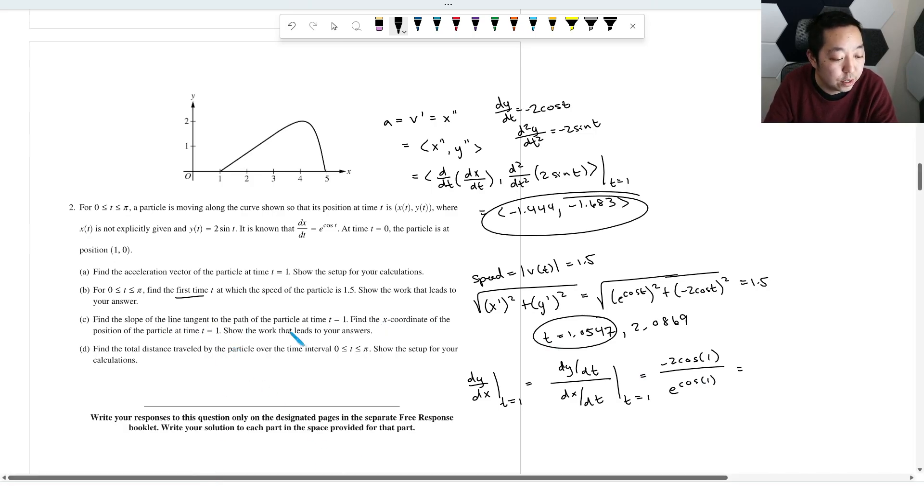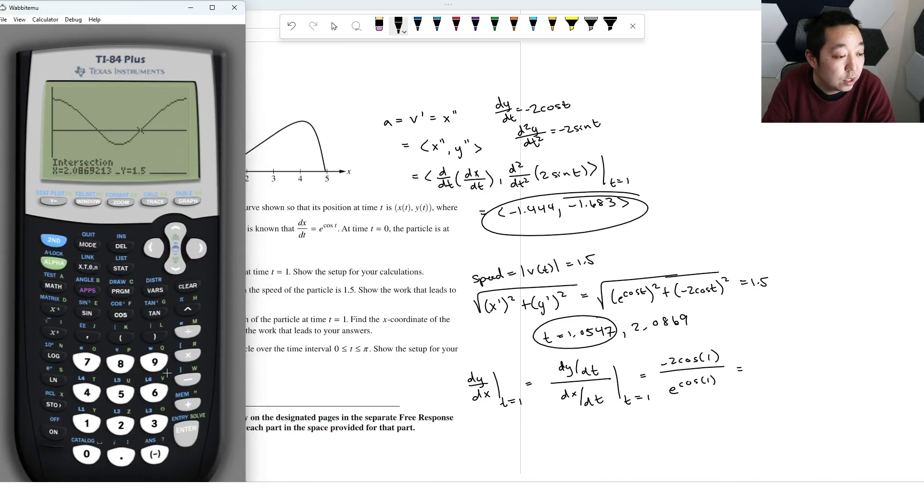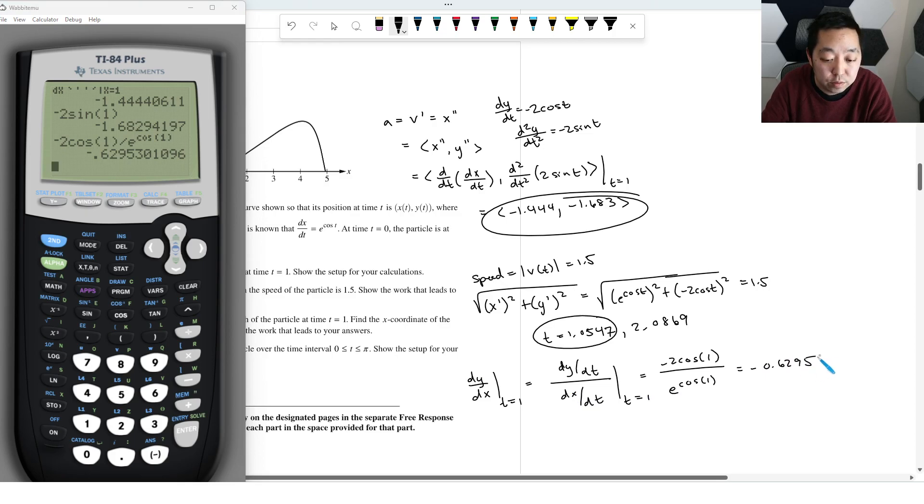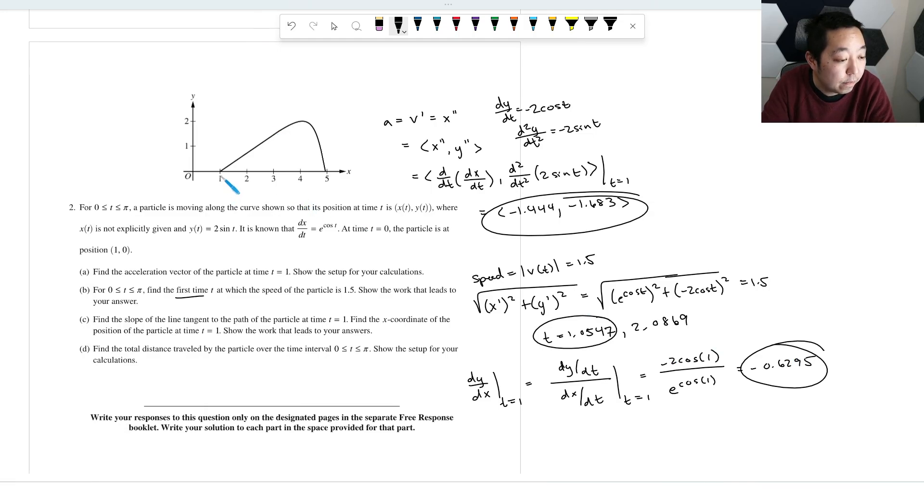And then find the x coordinate of the position. Okay, so it's two questions, right? So find the slope of the tangent line, let's just focus on that one first. So this is just going to be negative two cosine of one, divided by e to the cosine of one. Oops, that, okay, so I get that's negative 0.6295. That's the slope of the tangent line. And let's just confirm that, that looks like about one. Actually, this is the find the slope of the tangent line at time t equals one. Doesn't look like it should be negative.